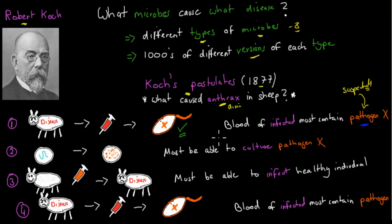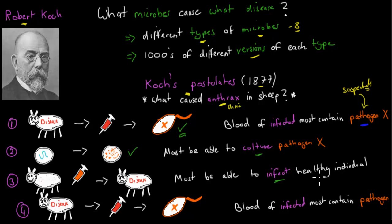The next step was to take that suspect pathogen and put it on agar plates and grow it in culture — making more of it. He did that with the anthrax bacteria from the sheep and successfully cultured it. Because if you can't make more of it, it can't truly be pathogenic. Step three was to take the cultured pathogen and inject it into a healthy sheep — it must be able to infect healthy individuals. He injected a healthy sheep with pathogen X and showed it did cause disease.